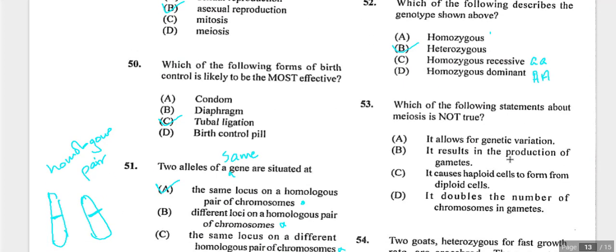Question fifty-three asks what is not true about meiosis. It allows genetic variation — true. It produces gametes — true. It causes haploid cells to form from diploid cells — true. It doubles the number of chromosomes in gametes — not true. Meiosis halves chromosome numbers to prevent doubling with each generation. Answer is D.